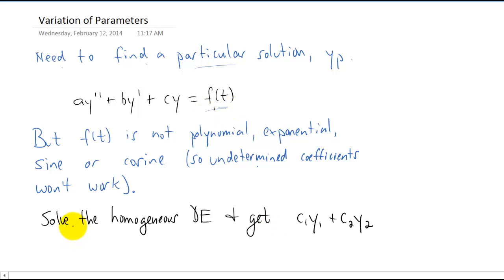So as always what we do is we solve the homogeneous differential equation and we get c1 y1 plus c2 y2 where y1 and y2 are both linearly independent solutions. So obviously these are both functions of t. Now that is actually nothing new. We always do that.